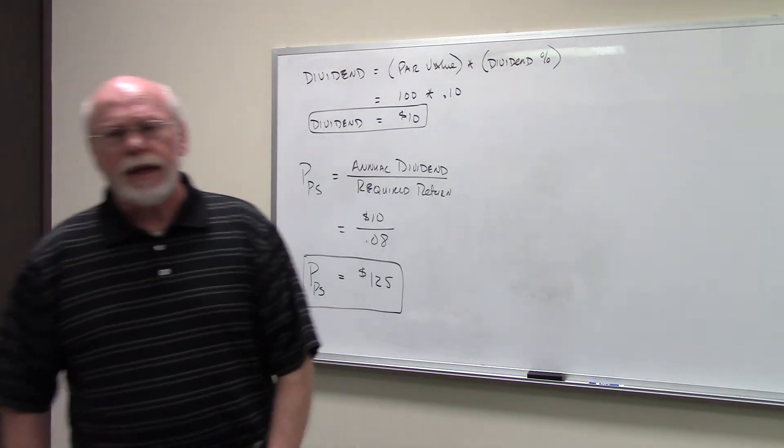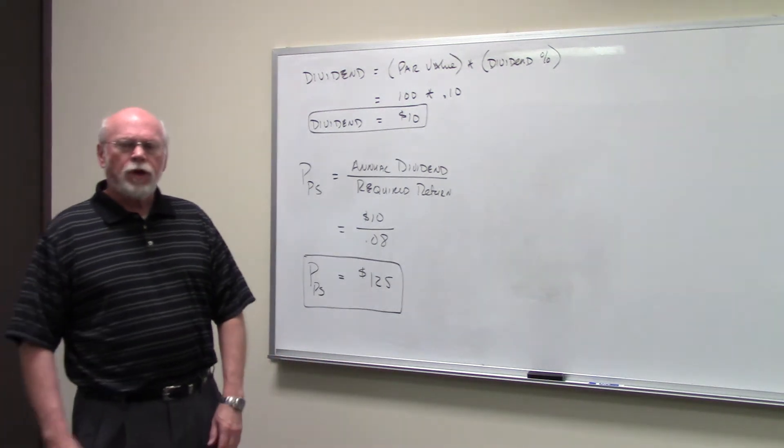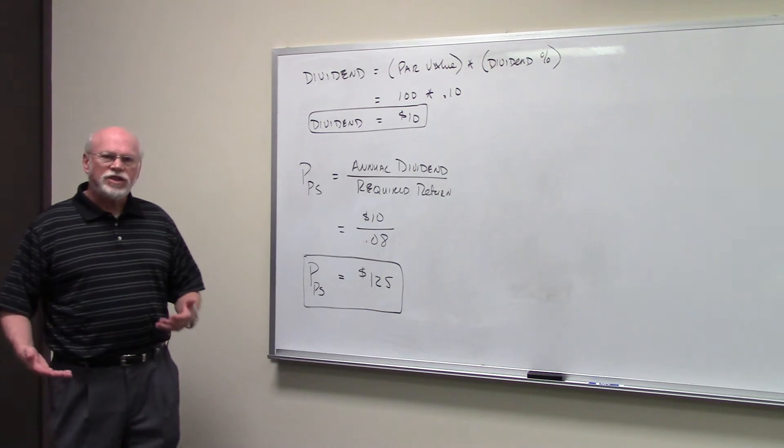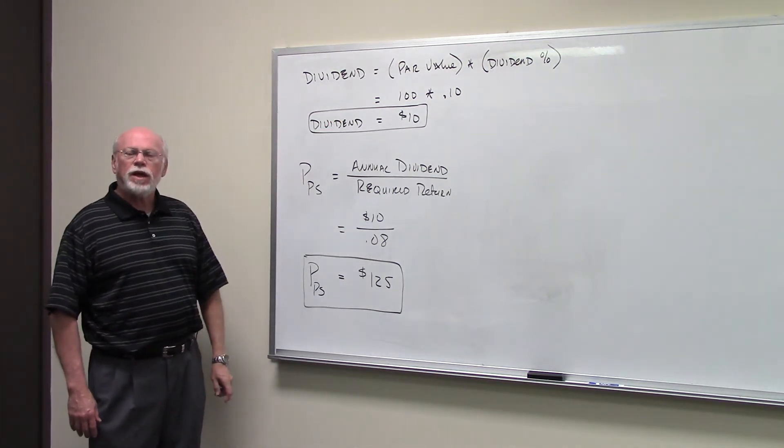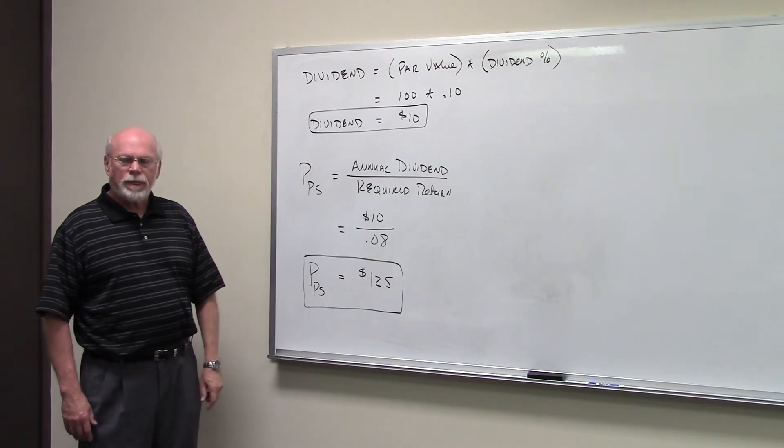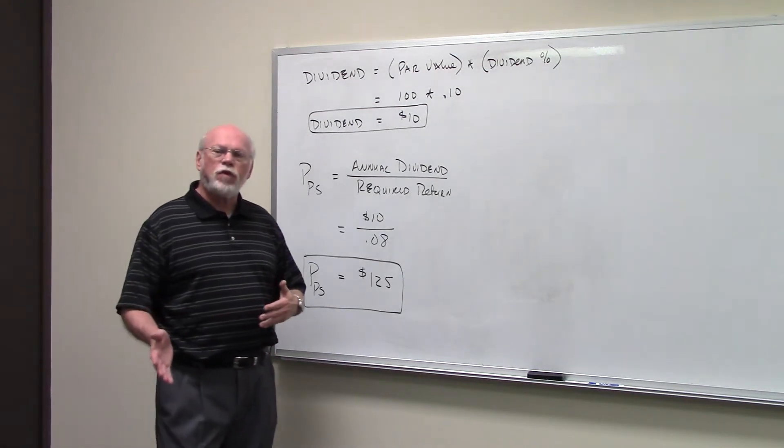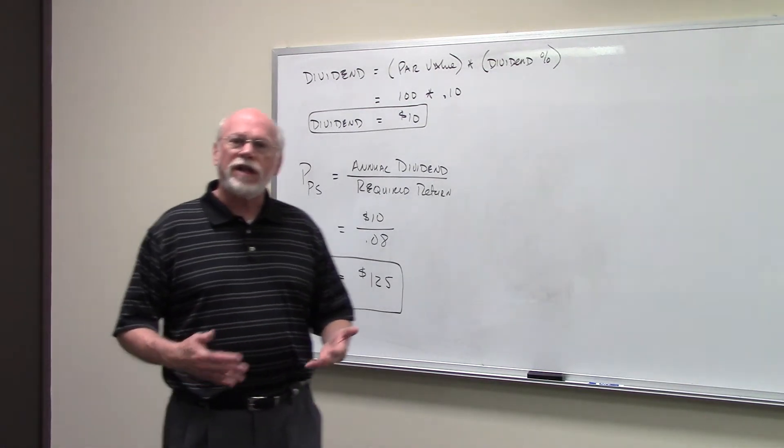In this particular problem, they tell us that the preferred stock has a dividend rate of 10%. And when you're given the dividend in the form of a percentage, in order to get the dollar dividend, you take the par value of the preferred and you multiply it by the dividend percentage.